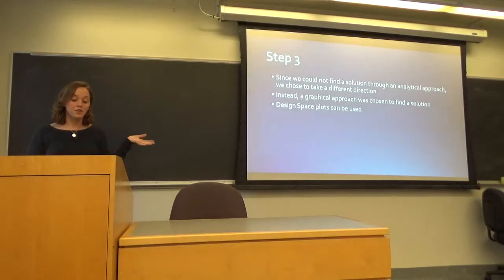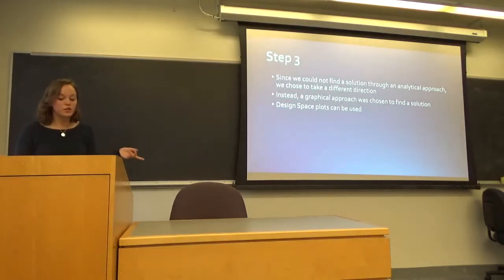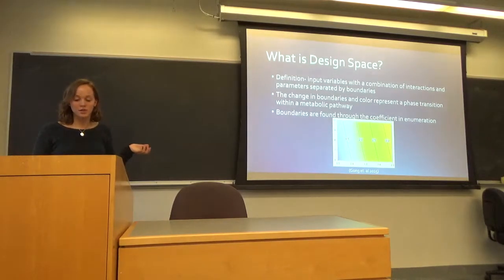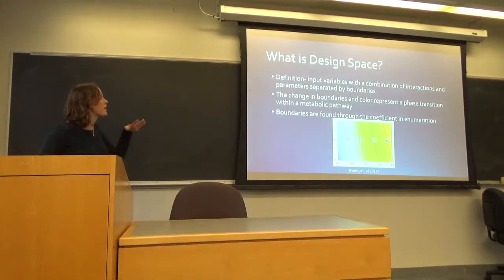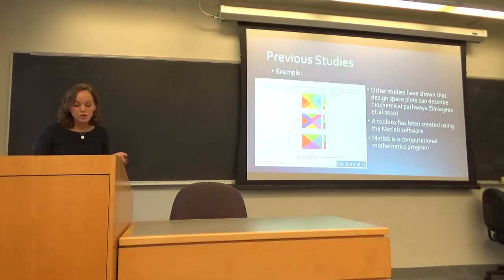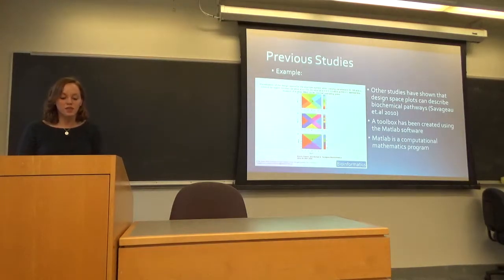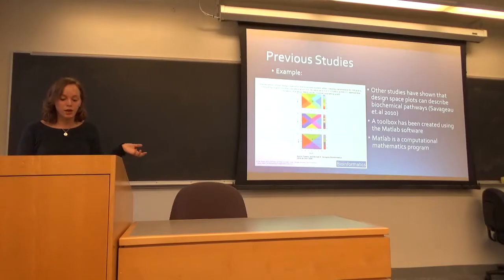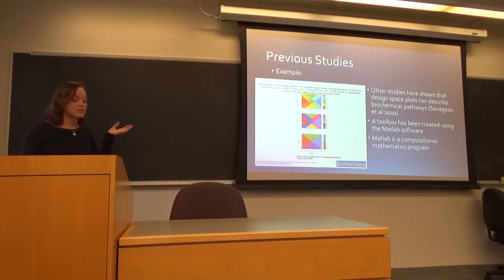Instead, we diverted our research and decided to use design space plots to help describe and see how the fitness of the pathway changed over time. A design space plot has input variables with a combination of interactions and parameters separated by boundaries. Each change in color shows a phase transition within the metabolic pathway, and boundaries are produced through coefficient enumeration. We found this approach from a previous study by Savageau, whose lab looked at different biochemical pathways and modeled them using design space plots, and created a toolbox in MATLAB.